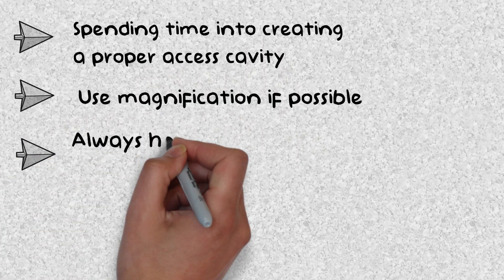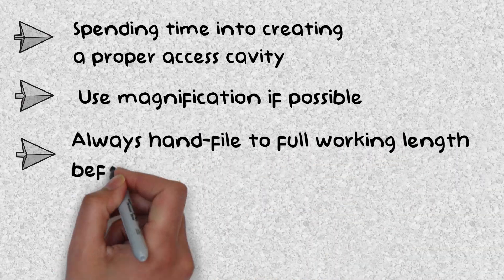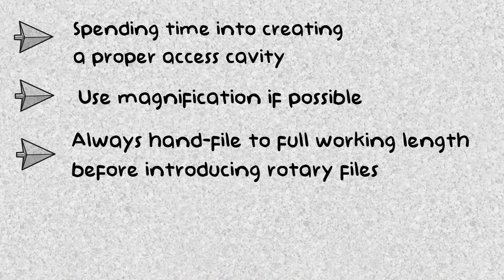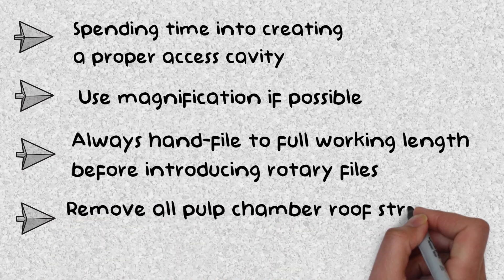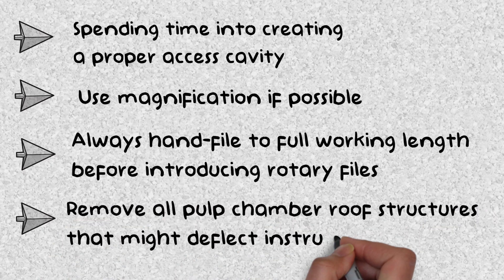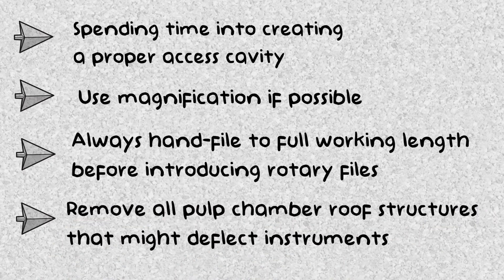Always hand file to a full working length before introducing rotary files — this will make sure your glide path is properly established. And finally, remove all pulp chamber roof structures that may deflect instruments. Remember, your rotary files are only for shaping, not for finding the way.